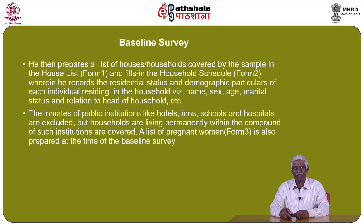The supervisor prepares a list of houses or households covered by the sample in the house list (Form 1) and fills in the household schedule (Form 2), recording the residential status and demographic particulars of each individual, namely name, sex, age, marital status and relation to head of household. The inmates of public institutions like hotels, schools and hospitals are excluded, but households living permanently within the compound of such institutions are covered. A list of pregnant women (Form 3) is also prepared at the time of the baseline survey.